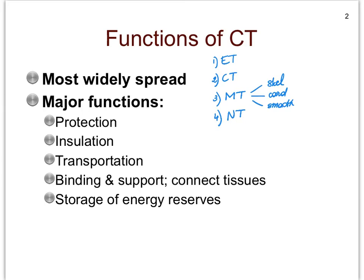Of these four tissue categories, your connective tissues are definitely the most widespread. I'm going to give you some examples of connective tissues, or locations made up of connective tissues — a mixture of organs and connective tissue names — and you'll quickly realize how widespread they are and what their major functions are. For instance, blood, believe it or not, is considered a connective tissue. Bone tissue, cartilage, your skin, and tendons and ligaments are all examples.